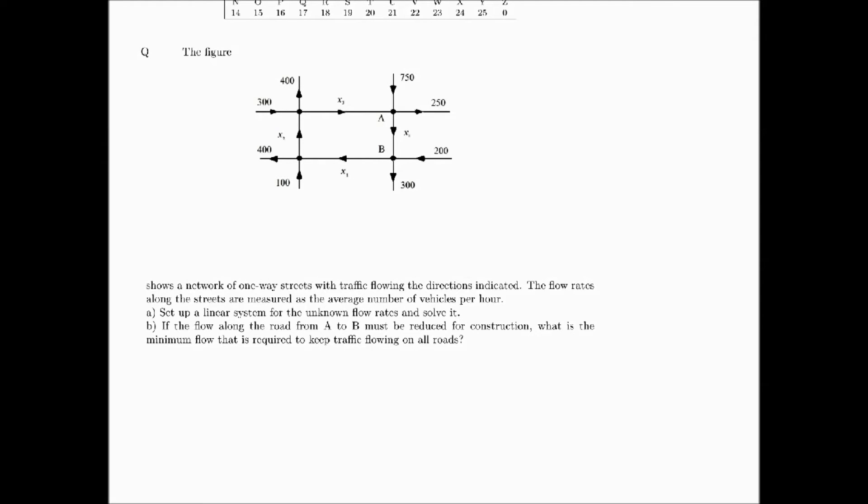This is the second application we're looking at: a traffic network example. Basically, what you're looking at is a network of one-way streets with traffic flowing in the directions indicated. The flow rates along the streets are measured as the average number of vehicles per hour. Our first aim is to set up a linear system for the unknown flow rates and solve them.